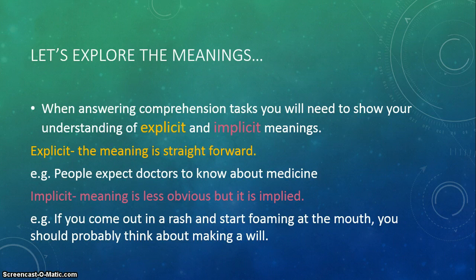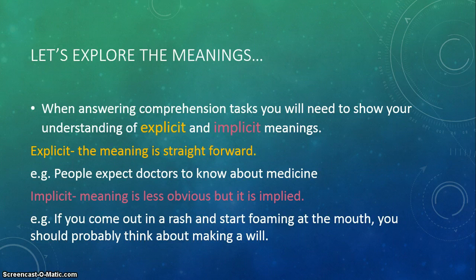What you need to know is that examiners regard understanding implied meaning as an indication of higher ability. If you can look at a text, find implied meanings, explain them, support them with quotations, and look at the effect they create, you're going to get a much higher grade than somebody who just looks at the straightforward meaning. So how do we develop this skill?